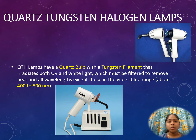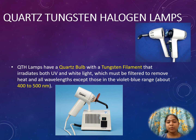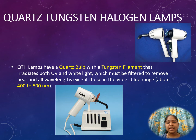Quartz tungsten halogen lamps, or QTH lamps, have a quartz bulb with a tungsten filament that irradiates both UV and white light, which must be filtered to remove heat and all wavelengths except those in the violet-blue range, about 400 to 500 nanometers. In this QTH lamp, vibrational energy is converted into light energy. The intensity of the bulb diminishes with use, so a calibration meter is required to measure the intensity for better treatment.